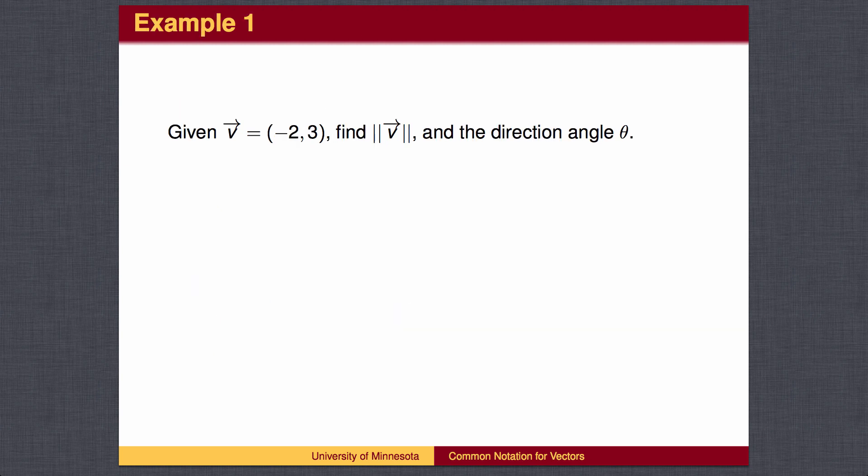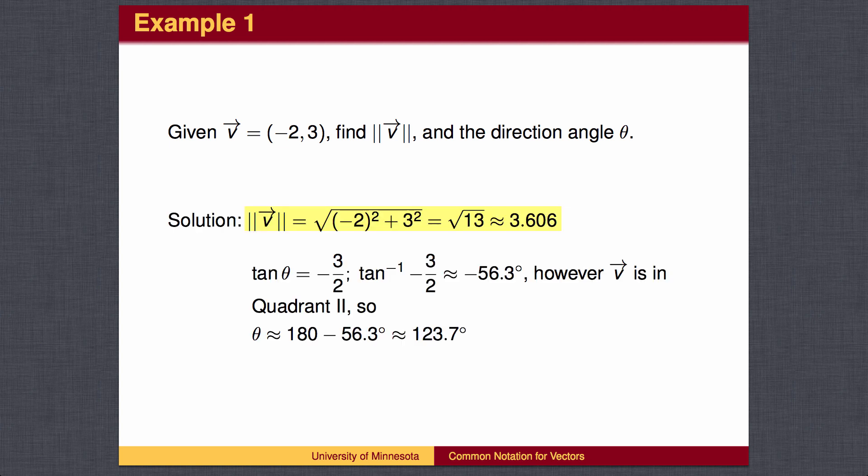Here is an example. We are given the rectangular form of the vector and wish to find the polar form. We find the magnitude by the Pythagorean theorem. We use the inverse tangent to find the angle. Notice that the vector v points into the second quadrant, so we find the angle by subtracting the reference angle of 56.3 degrees from 180 degrees.